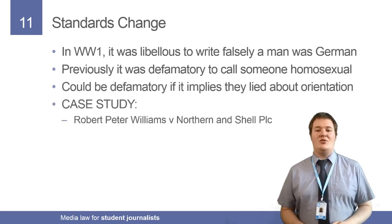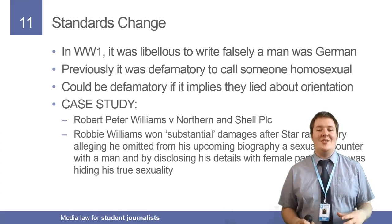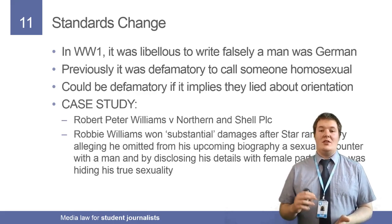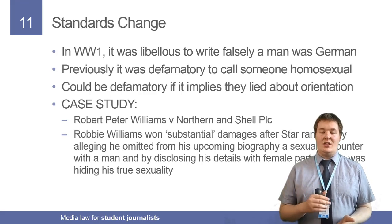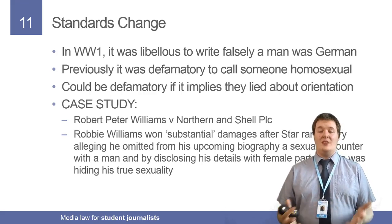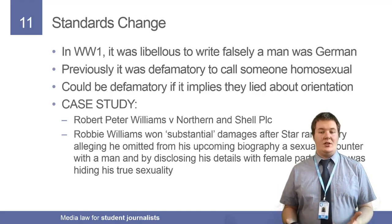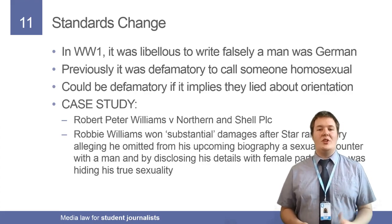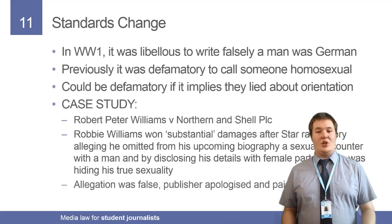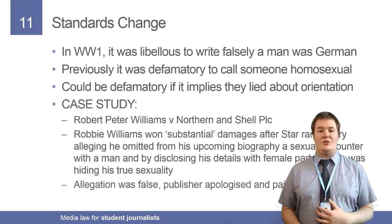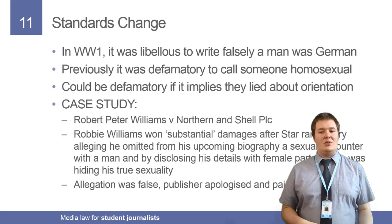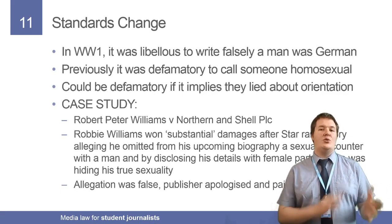The case study on this is Robbie Williams versus Northern Shell. Robbie Williams won a substantial sum after the Star ran a story saying he had had sex with a man in a Manchester nightclub and had admitted this from his tell-all biography — implying that by admitting this sexual encounter, he was lying about or hiding his true sexuality. It wasn't true; Northern Shell couldn't prove the allegation, and had to apologise and pay substantial damages and costs. Even if it's not defamatory to say someone is homosexual, if you imply they're lying about it, that comes into the warning phrase — you're calling someone a liar.